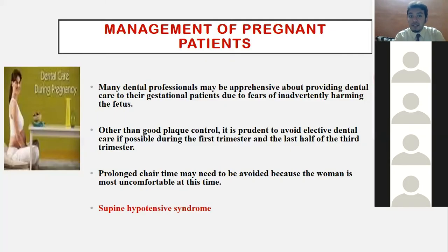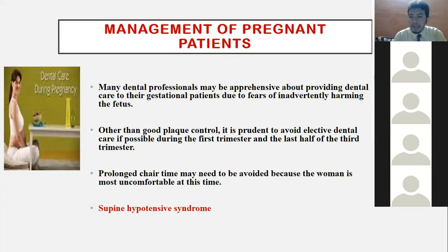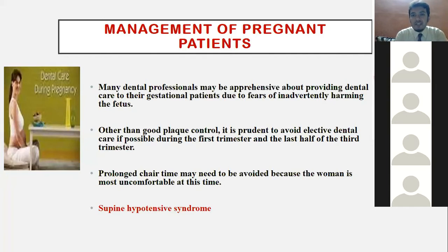Everything in pregnancy can be attributed to hormonal imbalance. Estrogen and progesterone levels increase and their receptors are present on the gingiva. The most common bacterium found in pregnancy is Prevotella intermedia, which predominates in the gingival sulcus because it requires vitamin K (menadione), which is supplied by the elevated hormones. That is why P. intermedia dominates and the conditions occur.